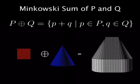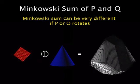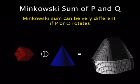The Minkowski addition of two objects P and Q is the summation of all points from P and Q. Minkowski addition plays fundamental roles in many geometric problems, including motion planning and penetration depth estimation.